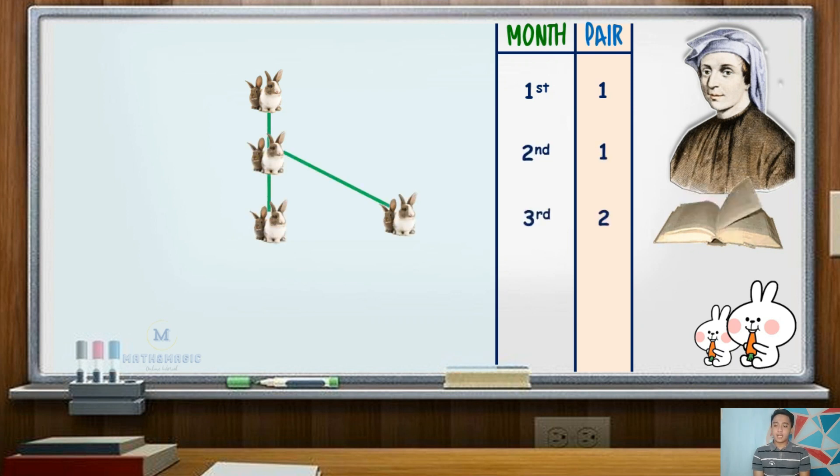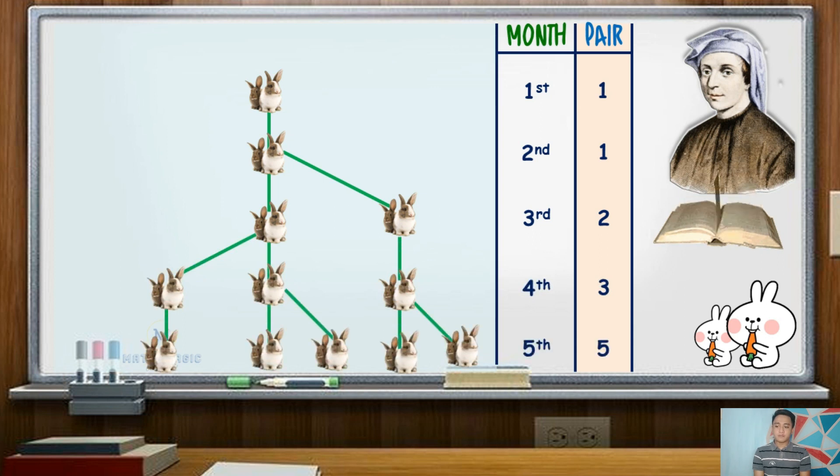The pairs of young rabbits become adults and bear their offspring at 2 months old. Assuming that there is no casualty, how many adult pairs of rabbits are in the herd at the end of n-months?